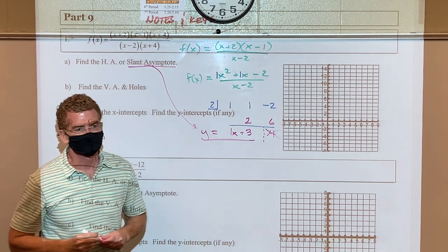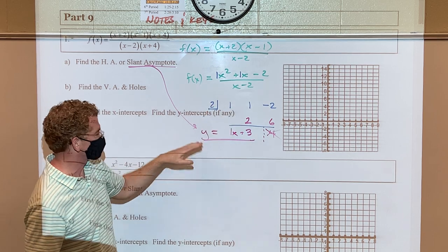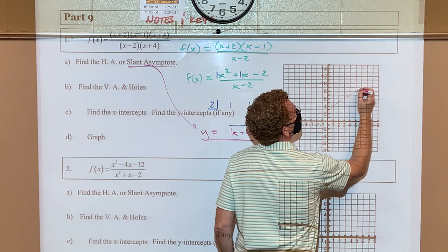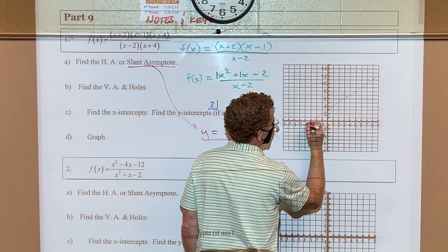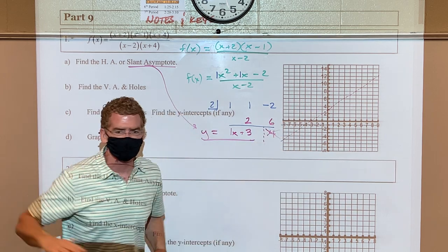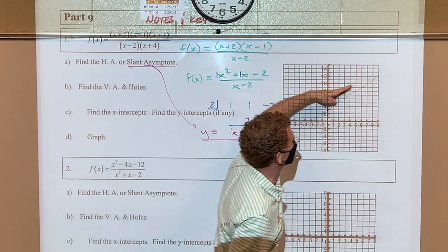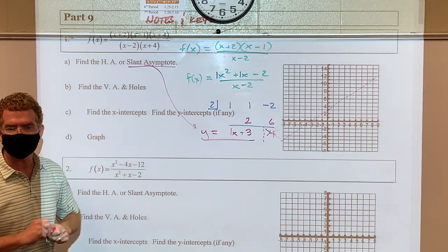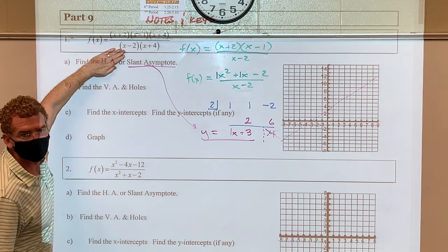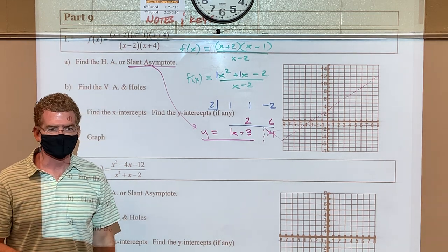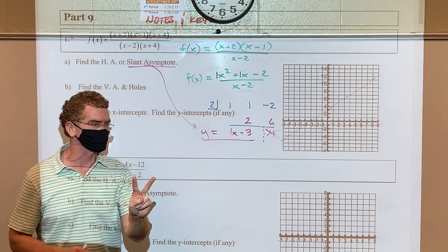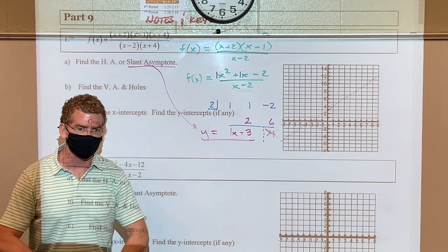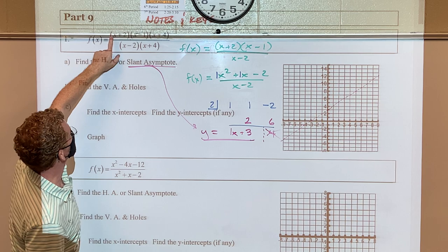So the slant asymptote is y = x + 3. To sketch, start at +3 with slope 1 and draw that line — the graph will approach it going out. Now, if you have a horizontal asymptote instead, that's when the power on the top and bottom are the same, or the power is bigger on the bottom. Bigger power on top means slant.